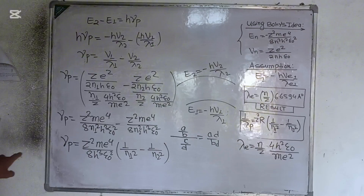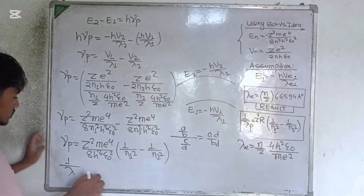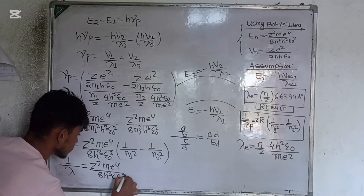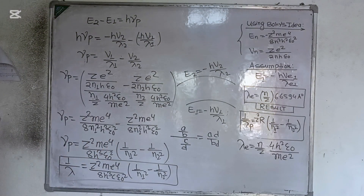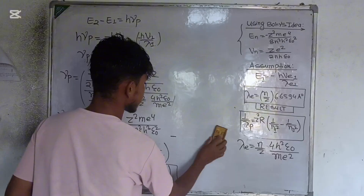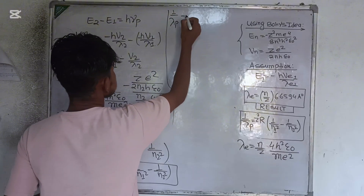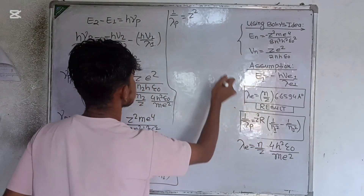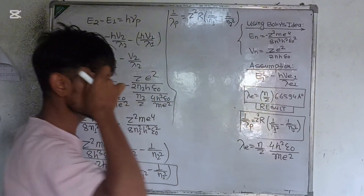Since ν = c/λ for a photon, I can write: 1/λ_photon = Z²me⁴/(8h³cε₀²) × (1/n₁² − 1/n₂²). This is exactly the Rydberg formula, where the prefactor Z²me⁴/(8h³cε₀²) is the Rydberg constant R. This is my answer.